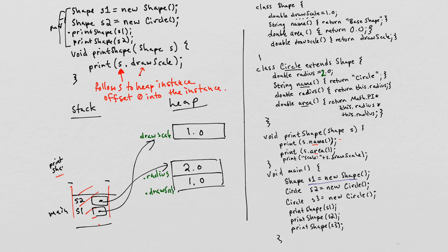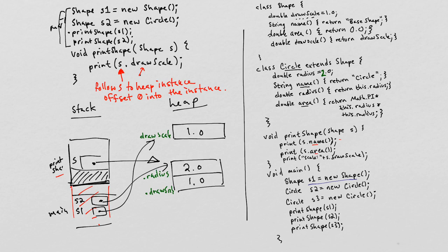Now let's run the print_shape code we compiled on the circle and see that we just messed everything up. We push a print_shape record, the local variable s refers to s2, and we try running: follow s to the heap instance, offset zero into the instance. But offset zero now gives me the radius, not the draw_scale. This is a problem — we'd need to test at runtime whether s is a shape or a circle, and that's going to be slow.